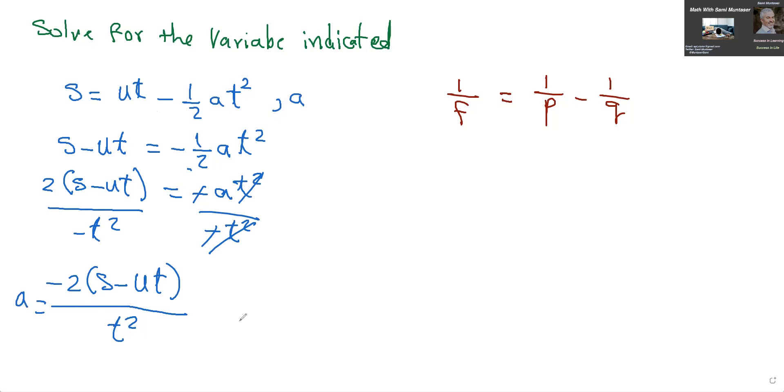Also, you could express it if you want as negative 2S plus 2UT over T squared, and that's also an answer that you could express it as. So if this is a multiple choice, they could write it like this, they could write it like that. They could also write it as 2UT minus 2S over T squared. So they just flip it around.